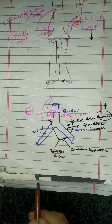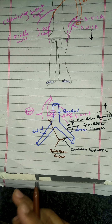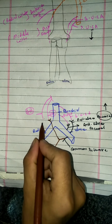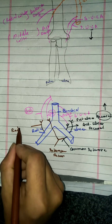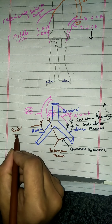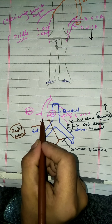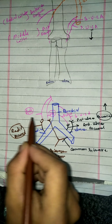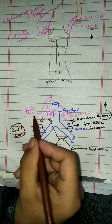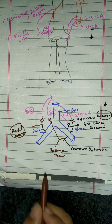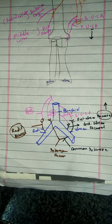From the radial artery, an artery originates known as the radial recurrent artery. This radial recurrent artery anastomoses with the anterior descending branch, also known as the radial collateral artery, because the collateral goes downward and the radial recurrent goes upward.